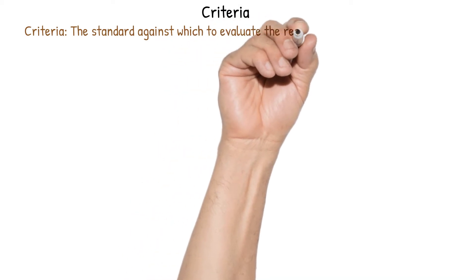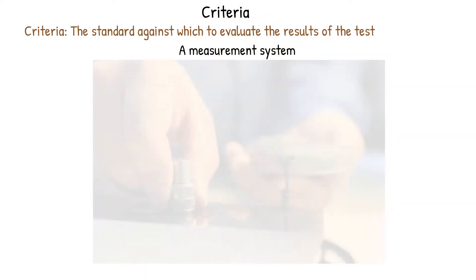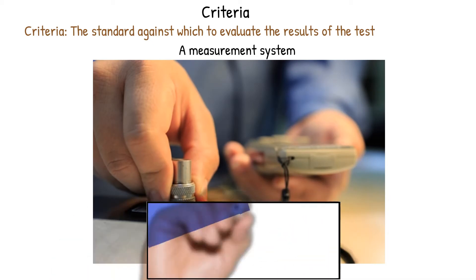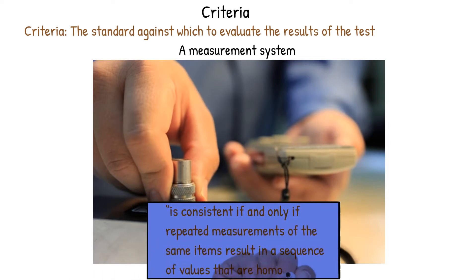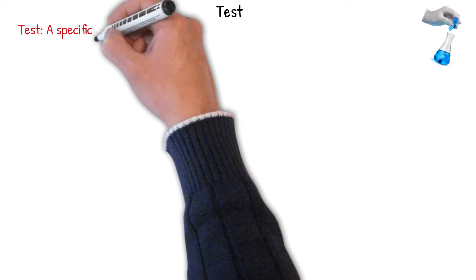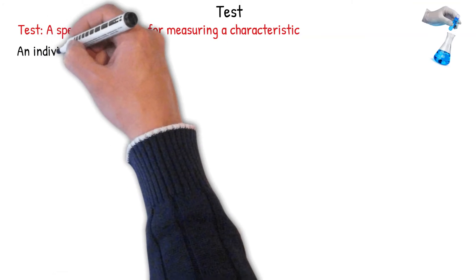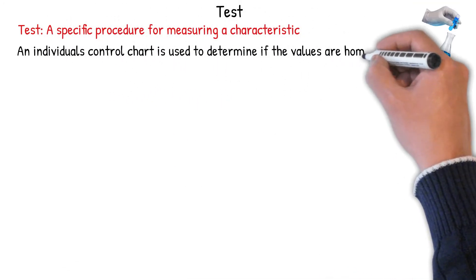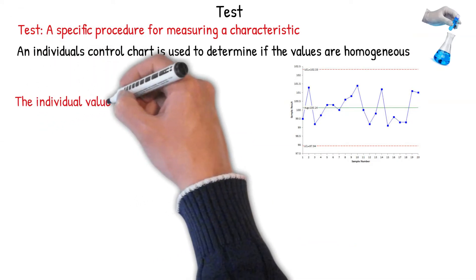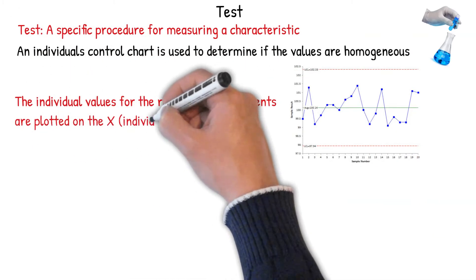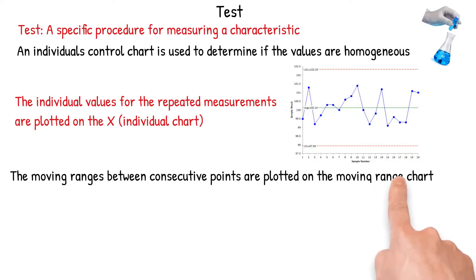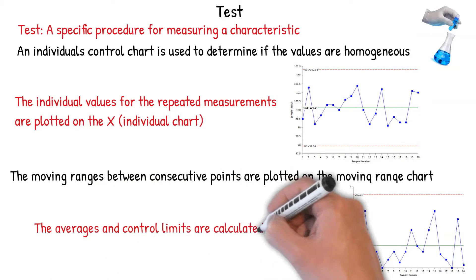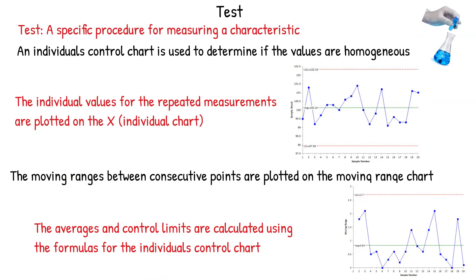Let's talk about the criteria — the standard against which to evaluate the results of the test. A measurement system is consistent if and only if repeated measurements of the same item result in a sequence of values that are homogeneous, or in control. The test is a specific procedure for measuring a characteristic: an individuals control chart is used to determine if those values are homogeneous. The individual values are plotted on the X chart, and the moving ranges between consecutive points are plotted on the moving range chart. The average and control limits are calculated using the standard formulas and put on the graph.